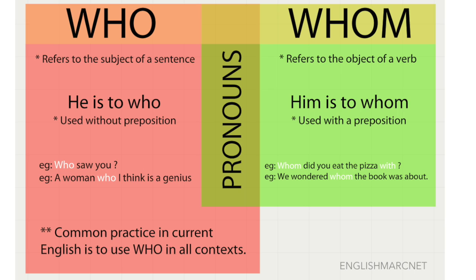Whom instead — the example for whom: 'We wondered whom the book was about.' So the book was about her or him. This is for whom.